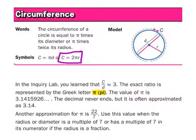A while ago we went over the different types of numbers — real numbers, rational numbers, and irrational numbers. Pi is one of the more famous irrational numbers. It's irrational because there's no pattern for the decimal, it goes on forever, it never repeats, and it never terminates. So it can't be written as a fraction.